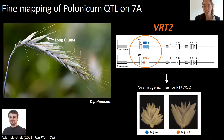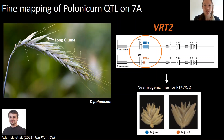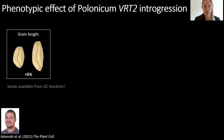He created a lot of genetic materials such as near isogenic lines and transgenics for this VRT2 polonicum allele, which allowed us to study in depth the phenotypic effects of its introgression.